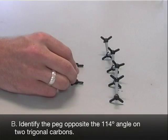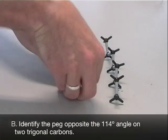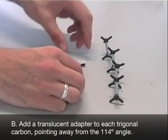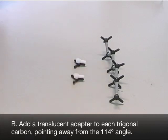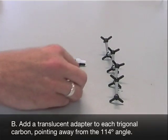Take two trigonal carbons and identify the peg opposite the 114 degree angle. Add a translucent adapter to each trigonal carbon, in each case pointing away from the 114 degree angle.